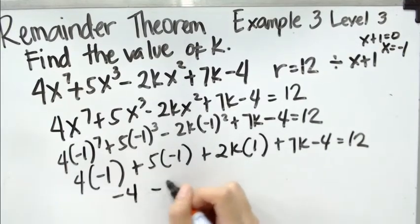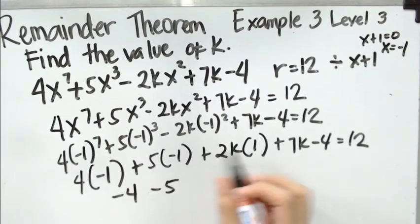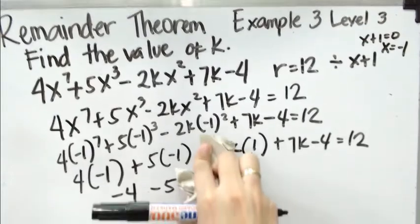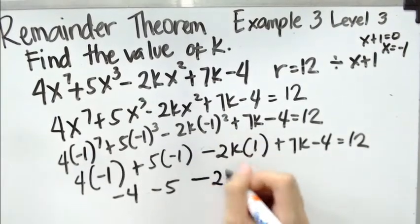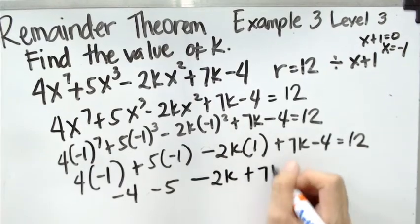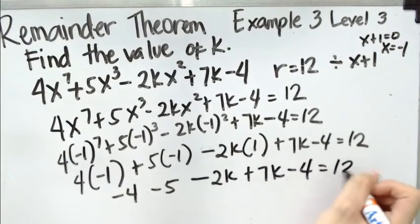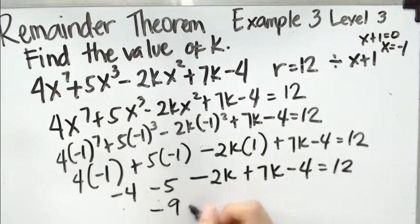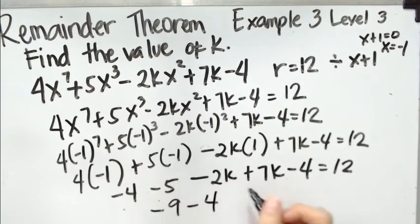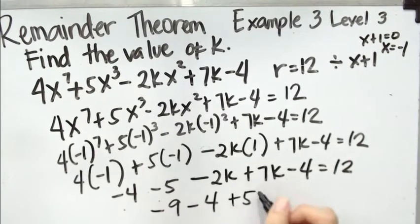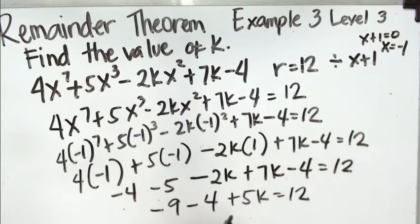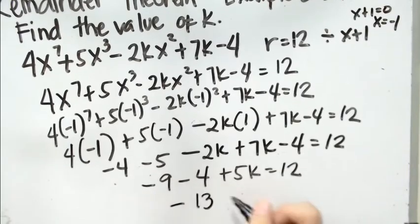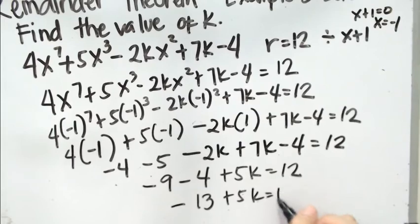Simplifying: 4 times negative 1 is negative 4, 5 times negative 1 is negative 5, minus 2k plus 7k minus 4 equals 12. Combining like terms: negative 4 plus negative 5 is negative 9, and negative 2k plus 7k gives us positive 5k equals 12.